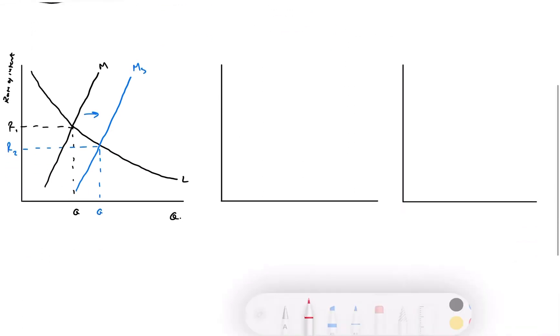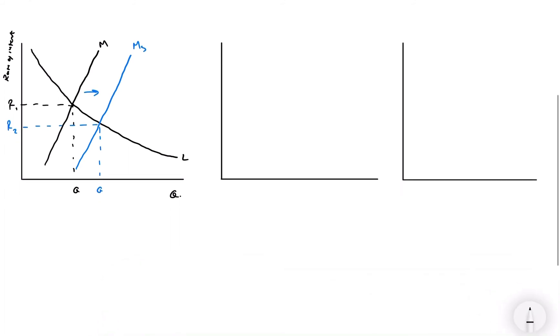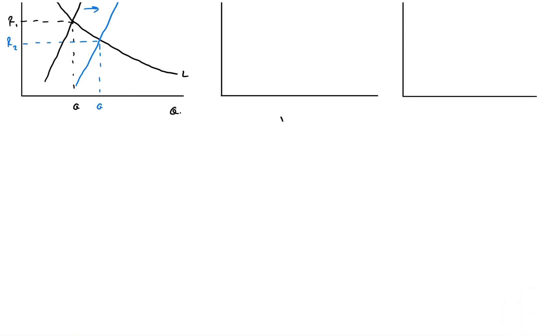So we'll use this second diagram to show what will happen to investment and savings. So we'll have this as the rate of interest again. I'll just have rate of interest, I for interest. And then we'll have the x-axis as investment.